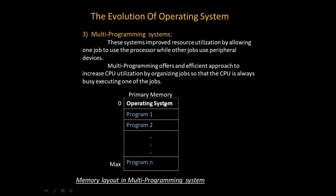The next kind of operating system is the multiprogramming system. This system improves resource utilization by allowing one job to use the processor while other jobs use peripheral devices. The multiprogramming system offers an efficient approach to increase CPU utilization by organizing jobs so that the CPU is always busy executing one of the jobs.